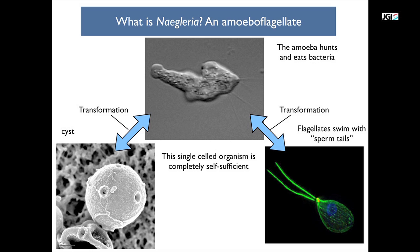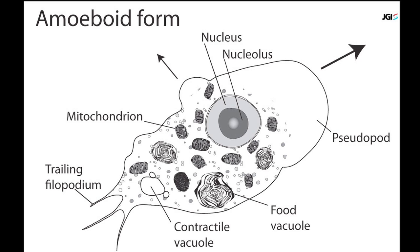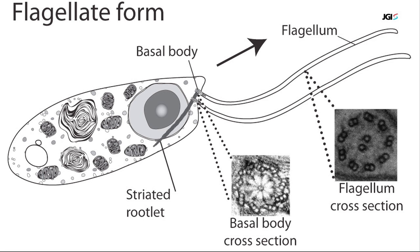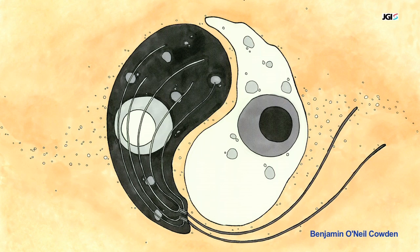Niglaria is a single-cell eukaryote. It lives, we think most of the time, as an amoeba. But when it gets stressed out, it can become a flagellate. Basically it makes two structures equivalent to sperm tails, streamlines its structure, and it can swim away.